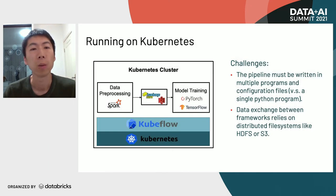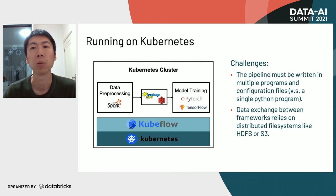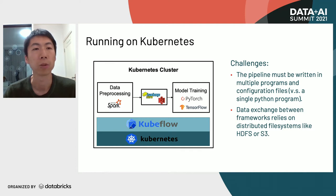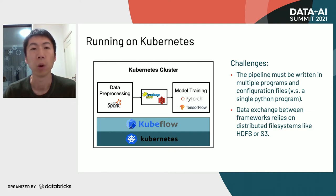Today, more and more organizations are moving to a single cluster managed by Kubernetes. By using a workflow orchestration framework like Kubeflow, we can implement end-to-end data analytics and machine learning pipelines on a single Kubernetes cluster. However, there are challenges: the pipeline must be written in multiple programs and configuration files — you need to write the Dockerfile, build the image, write the Spark program, and the machine learning or deep learning program, then construct an end-to-end pipeline. This is not as simple as writing a single Python program. It also usually requires a distributed file system for data exchange, adding latency.